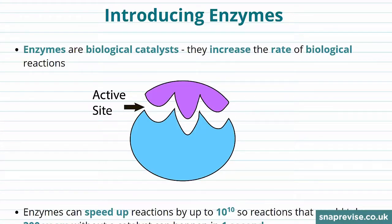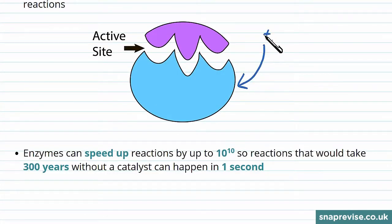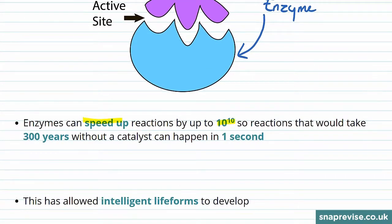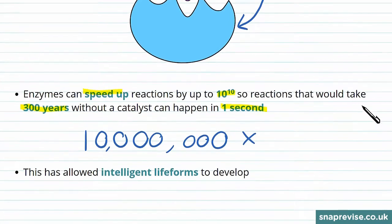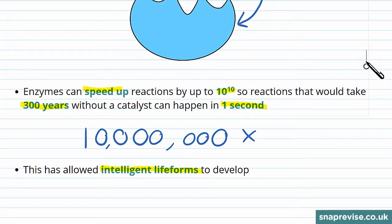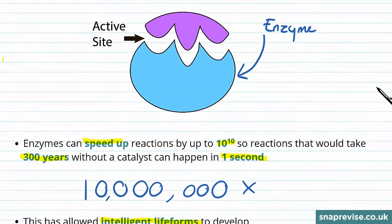You've probably heard of enzymes in biology as things that carry out tasks in the body, but enzymes really are just biological catalysts — they increase the rate of biological reactions. Enzymes can in fact speed up reactions by 10 to the 10 times, which is a huge number: 1 with 10 zeros after it. To put that in proportion, reactions that happen in 1 second with enzymes would take up to 300 years without the enzyme present. This has allowed intelligent life forms to develop, because the types of reaction that need to happen in our body can happen a lot quicker.